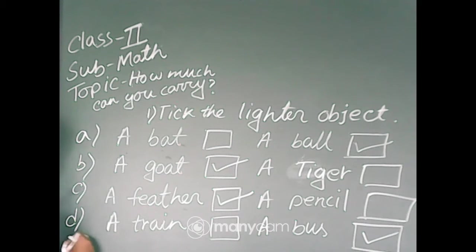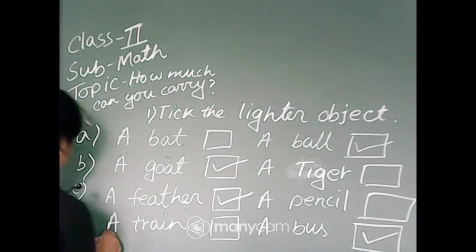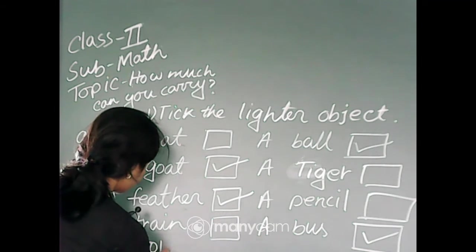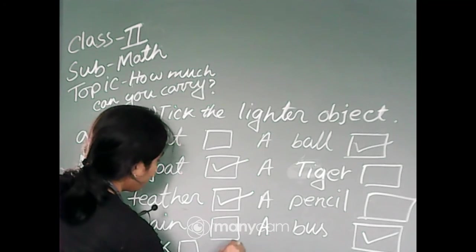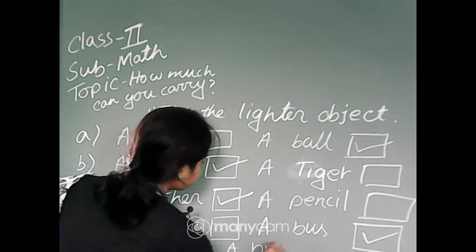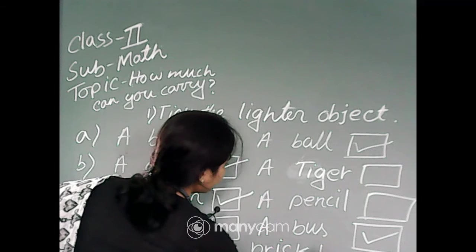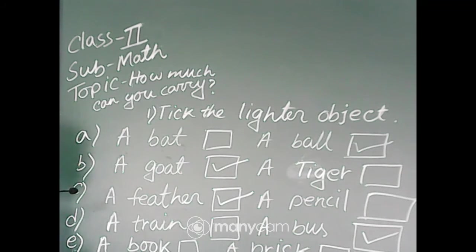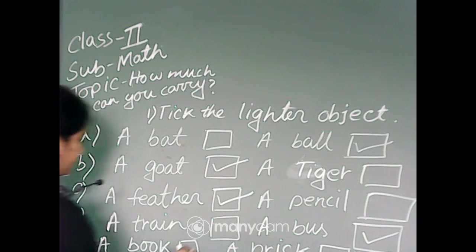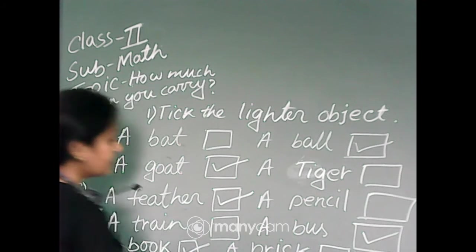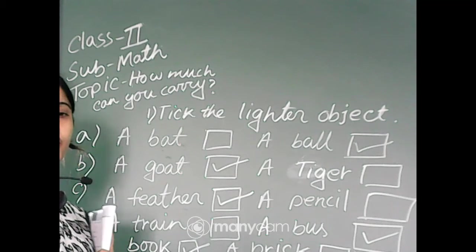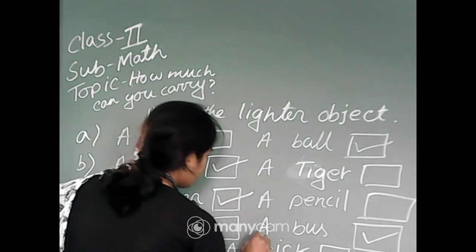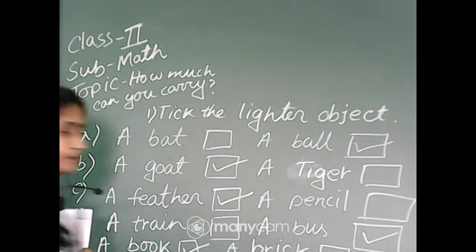And this is number E: a book or a brick. Which is lighter? Book or brick? Lighter object, book or brick. So tick book. Book is lighter than brick, so tick book. Okay.